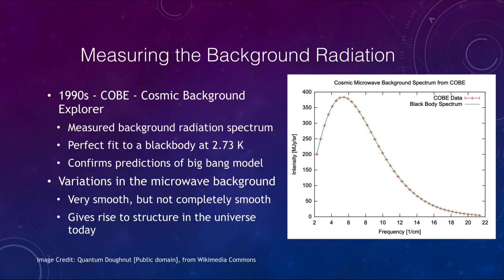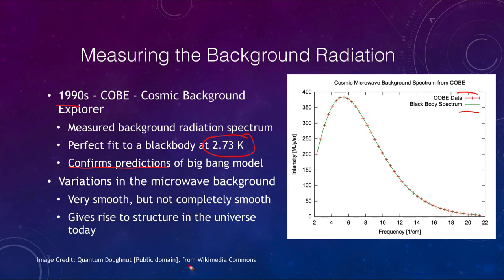With better instruments we can now measure this radiation in more detail. In the 1990s, COBE — the Cosmic Background Explorer — measured the radiation spectrum and found it to be a perfect fit to a blackbody at 2.73 Kelvin. The blackbody spectrum and the COBE data match up almost perfectly. We don't generally get experiments that match that perfectly, so this fits extremely well and strongly confirms the predictions of the Big Bang model.